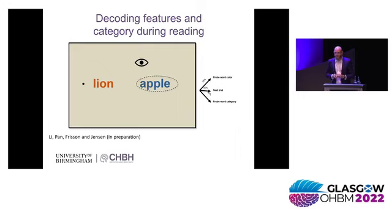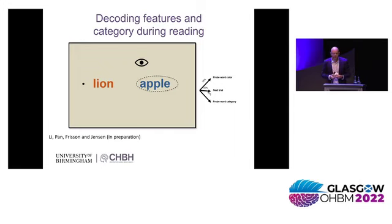We allow people to do saccades. Traditionally, people have been a bit afraid of doing tasks with saccades using MEG, simply because you get some artifacts from eye movements, but hopefully I can convince you that these eye movements are not a major problem when analyzing these data with multivariate analysis. We also had a task in which we were probing participants for whether they actually perceived the color of the presented words and also the category of those words.